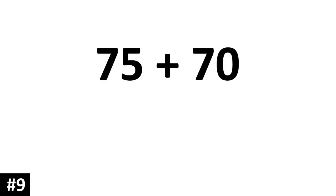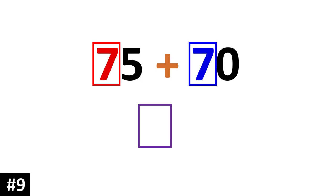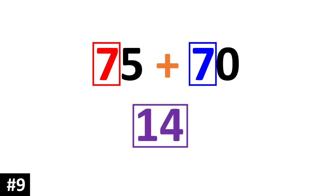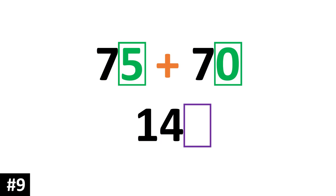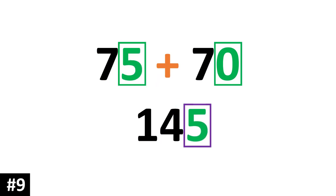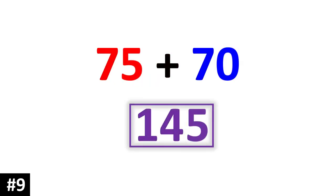75 plus 70. First we just focus on the tens column: 7 plus 7 is 14 tens. Focusing on the ones: 5 plus 0 is 5. The answer is 145.